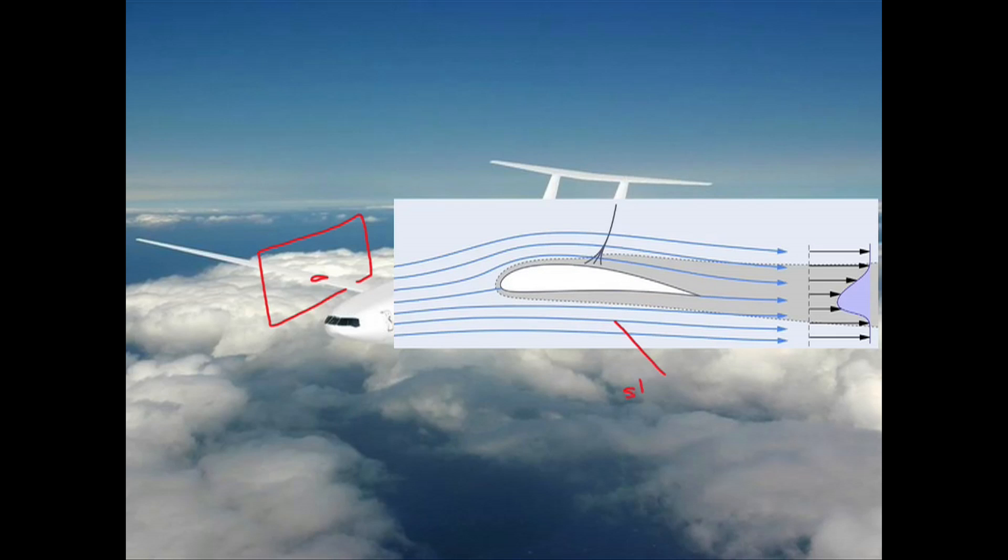The blue lines in this logo are called streamlines. They are the key to understanding how lift is generated on an aircraft, and what more important thing to know than why does an airplane fly.